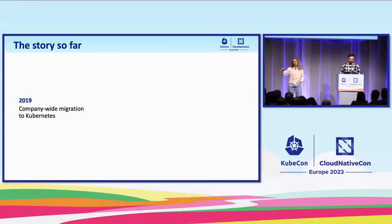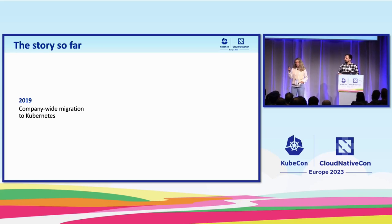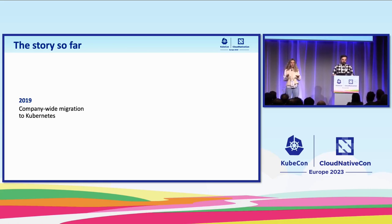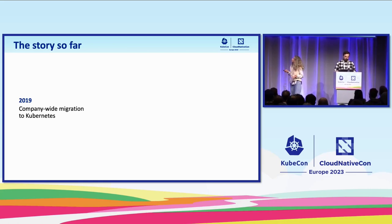Our story towards GitOps started in 2019 with this migration to Kubernetes. Teams could get direct access to clusters, so they started bringing and maintaining their own deployment tools, such as Spinnaker, Ansible, and Jenkins. Maybe you had this problem too if you're from a big company. People are consolidating their CI/CD on top of a single tech stack, and Adobe wanted to do the same.